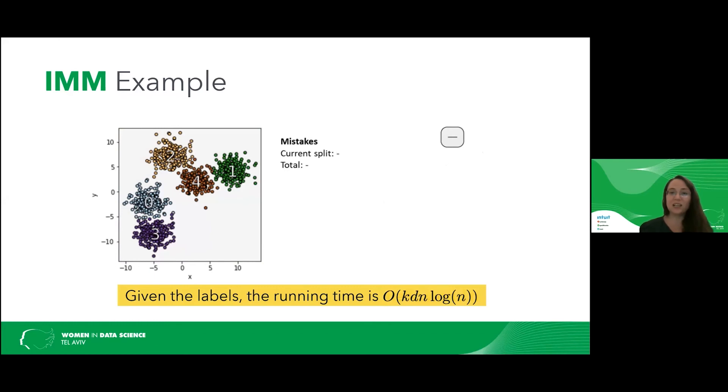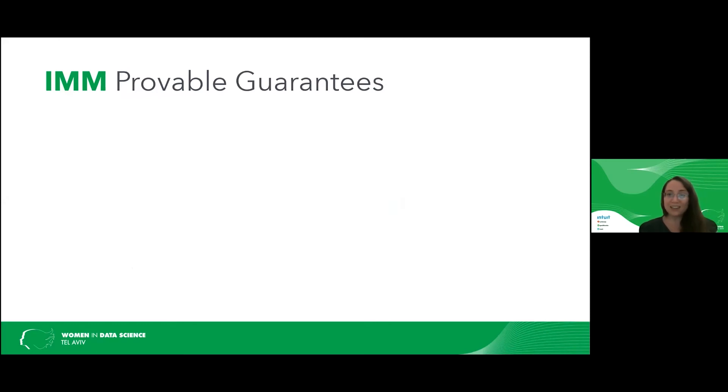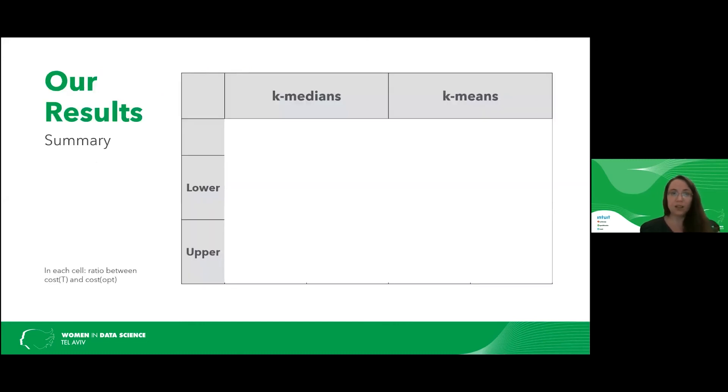Also notice that this algorithm is really efficient. Its running time is only k d n log n, where k is the number of clusters, d is the number of features, and n is the number of points. And a cool thing about this algorithm is that it has provable guarantees. For the first time, there is an algorithm with provable guarantees for explainable k-means clustering. So what are the provable guarantees? We were able to show that the IMM algorithm is an O(k^2) approximation. Again, notice this approximation doesn't depend on the dimension and the number of points.